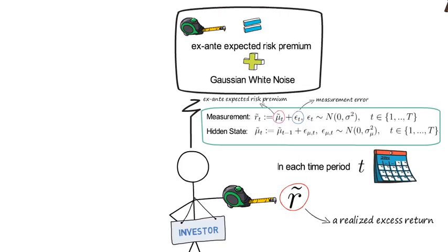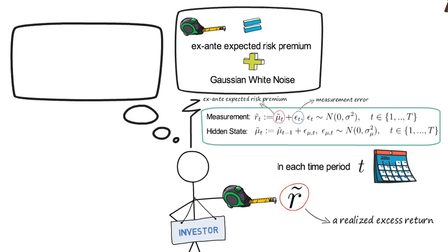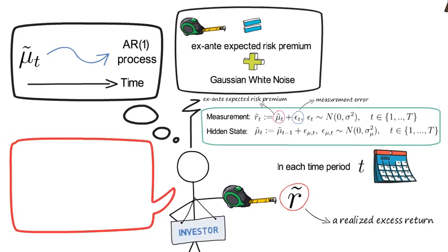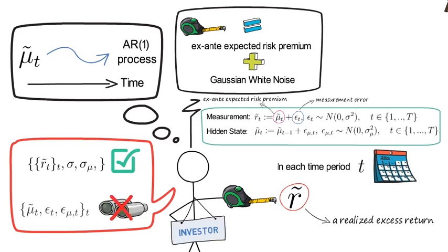And for whatever reason the investor also believes that the expected risk premium moves over time according to that AR1 process with autocorrelation coefficient of 1 and a Gaussian noise term. It's assumed that the investor knows the measurements of the excess returns over time as well as the parameters of the system which here are σ and σ_μ. While the investor does not observe the realizations of μ̃_t, ε_t, and ε_{μ,t}.